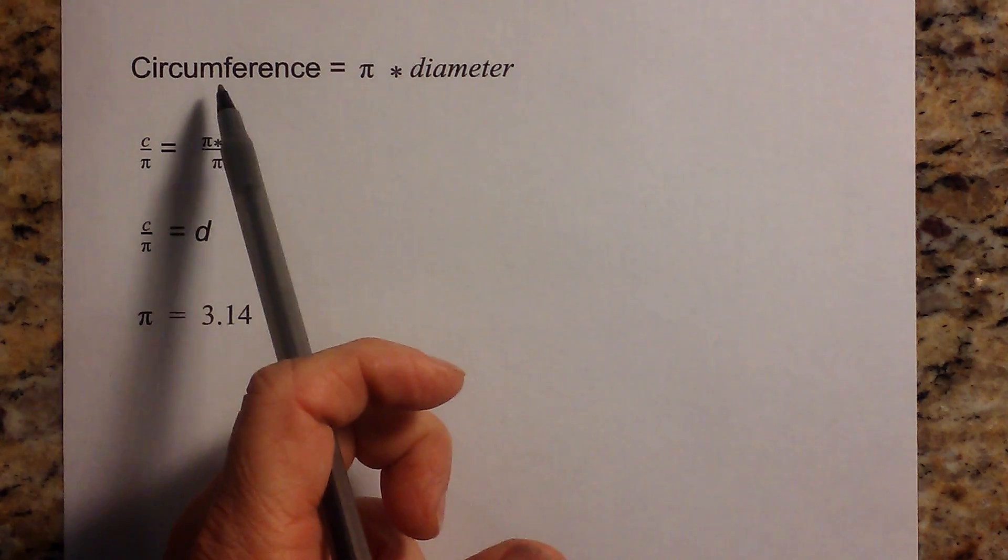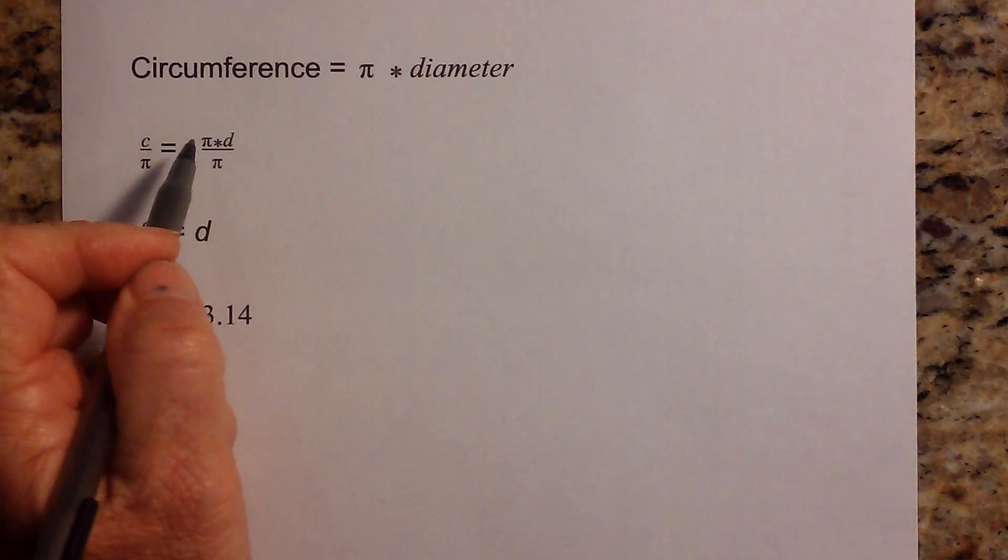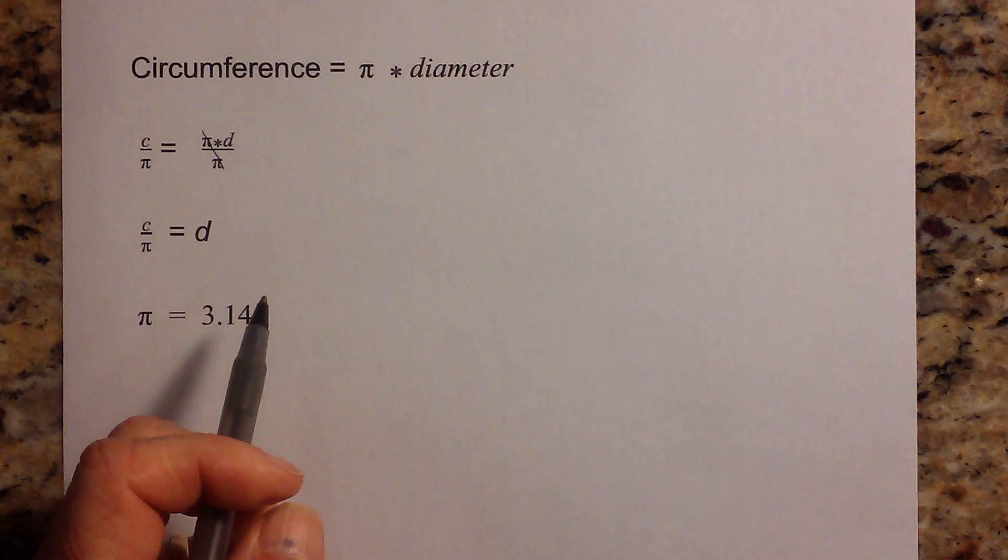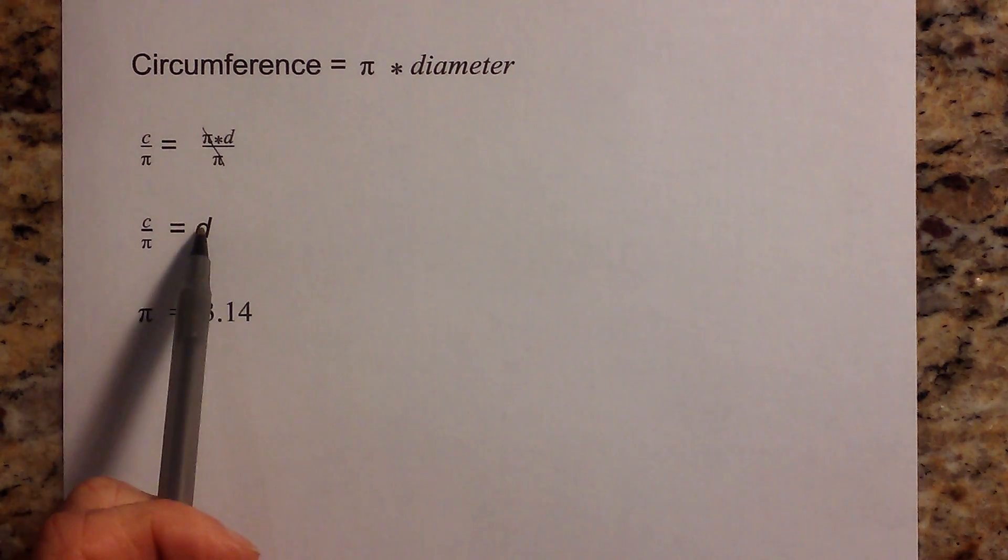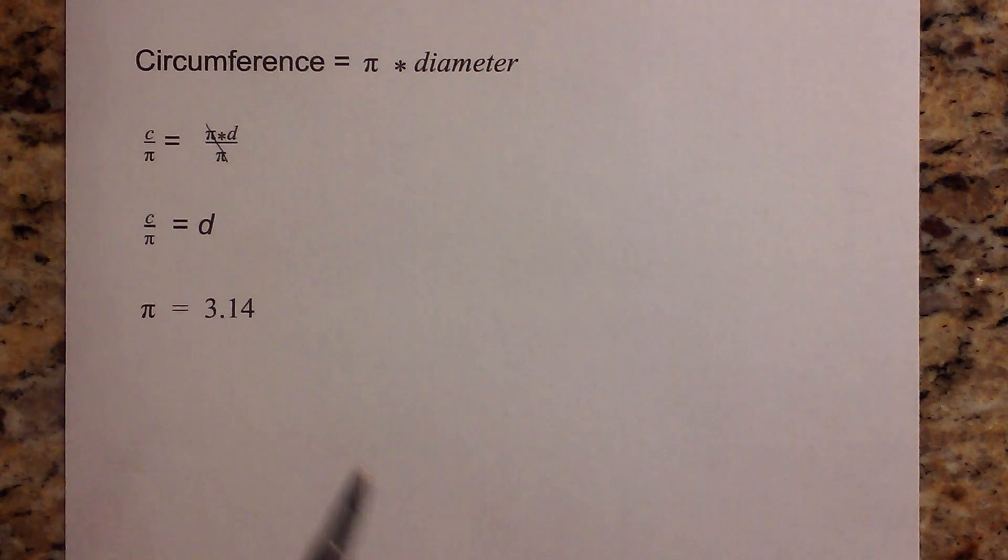Because what you do to one side you do to both sides of the equation. So when we divide both sides by pi, that gives us, this cancels, and so you are left with diameter is equal to circumference divided by pi. So that's how we get the formula.